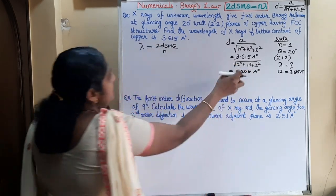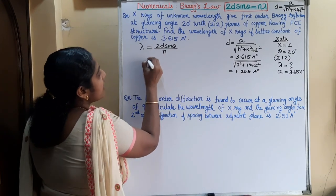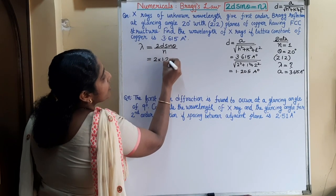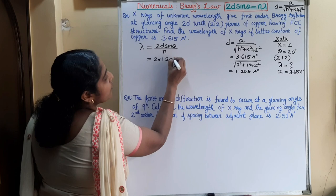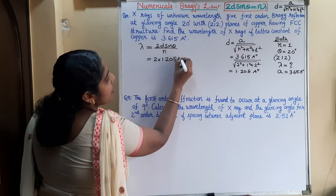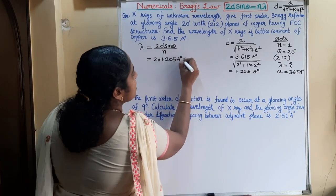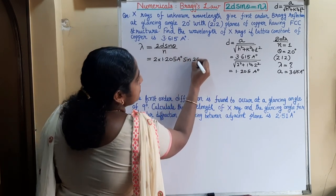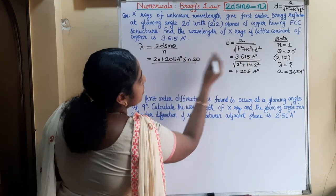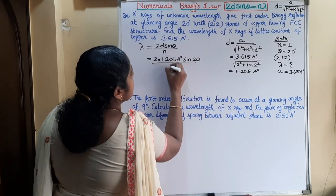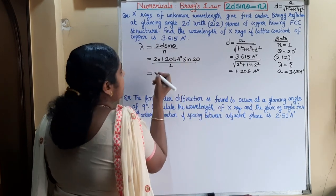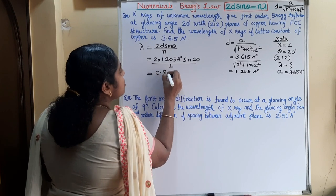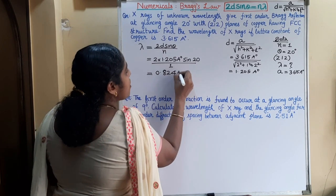Substituting the values into the wavelength formula: lambda equals 2 into 1.205 Angstroms into sin 20 degrees divided by 1. On calculating, we get 0.824 Angstroms.